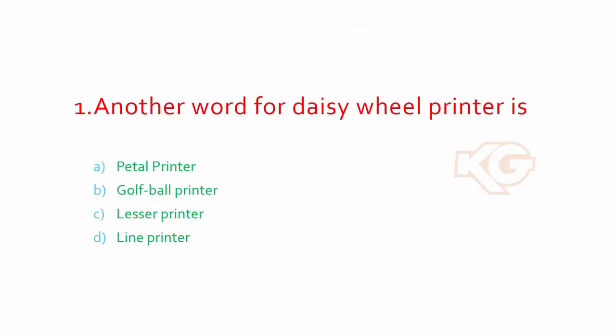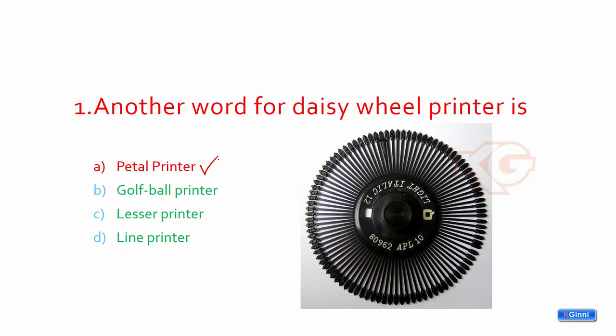The first question is: another word for daisy wheel printer is? You can see different printers over here. Petal printer, golf ball printer, laser printer, and line printer. But the option is petal printer. You can see the color changes. And here comes the image of petal printer. You can see all the figures are arranged towards the circumference, which will be used for printing.